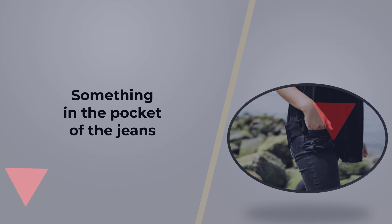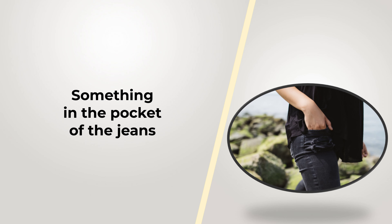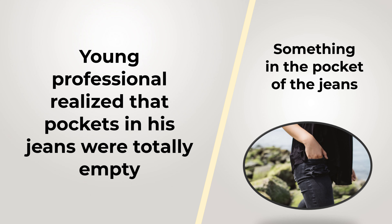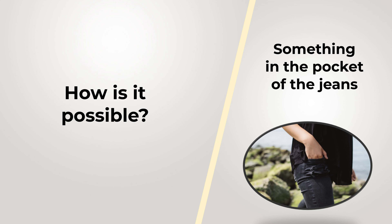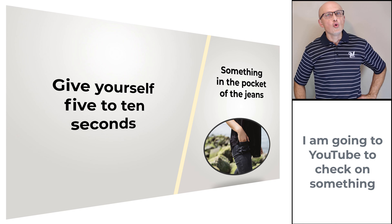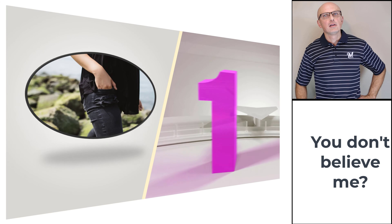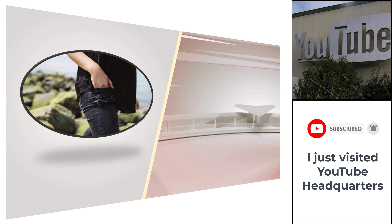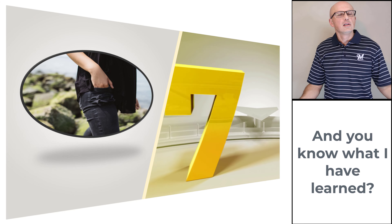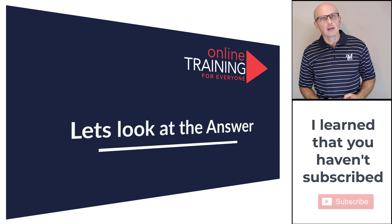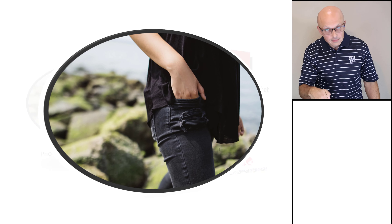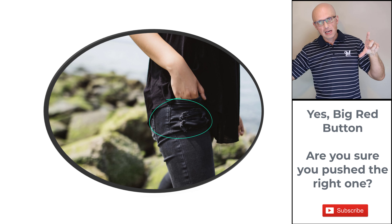Here's an interesting question that checks your knowledge of verbal reasoning — and some might say it tests your sense of humor too. A young professional realized that the pockets of his jeans were totally empty, but then realized there was something else in there. How is it possible? Take a close look at the picture. The solution is simple: there was a hole in the pocket of the young professional's jeans.